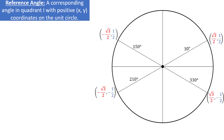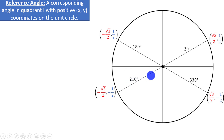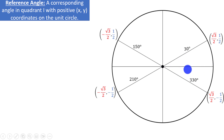The way to determine the reference angle is to measure the angle either above or below the x-axis. For example, 150 degrees is 30 degrees above the negative x-axis, so the reference angle will be 30 degrees. 210 degrees is 30 degrees below the negative x-axis, so the reference angle will also be 30 degrees. 330 degrees is 30 degrees below the positive x-axis, so the reference angle will again be 30 degrees.